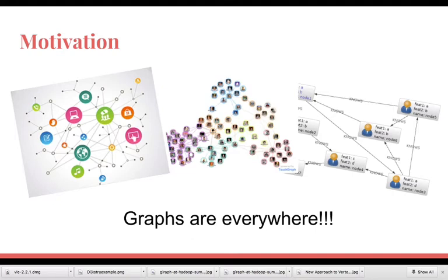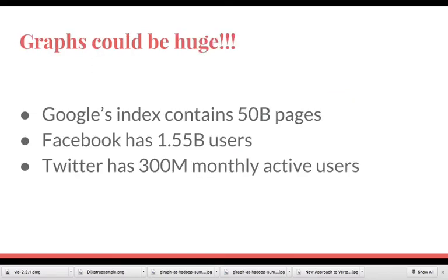Similarly, the database systems or the file systems in our computers could also be put as a graph where different nodes interact with other nodes based on their own roles and what kind of rights they have over files and how information flows between one party to another party. So graphs are everywhere and graphs could be huge. Google's page index contains 50 billion pages, Facebook has 1.55 billion users, and Twitter has 300 million monthly active users.